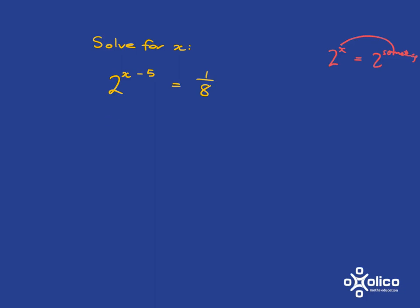Well, let me have a pen. It's 2 to the x minus 5. And what is 1 over 8? Well, it's 1 over 2 cubed. That still isn't exactly in this format: 2 to the x is equal to 2 to the something.